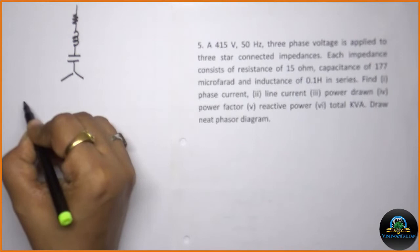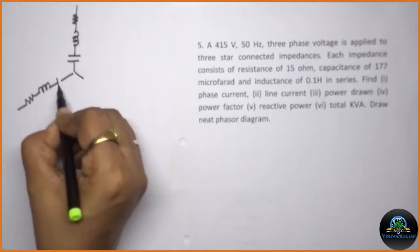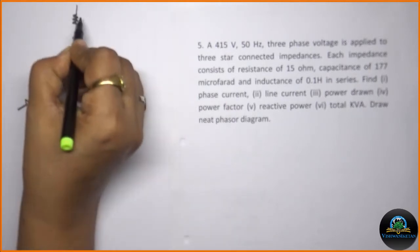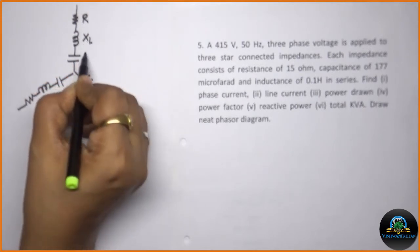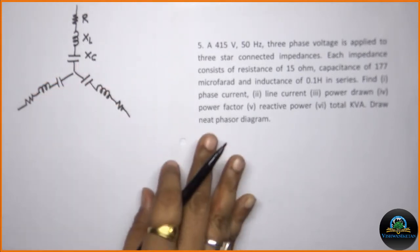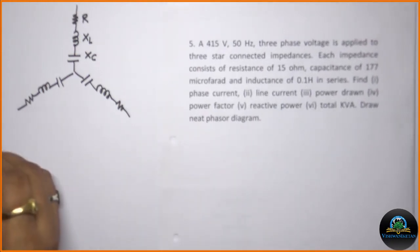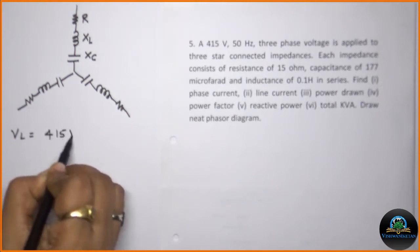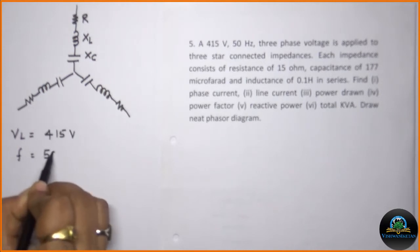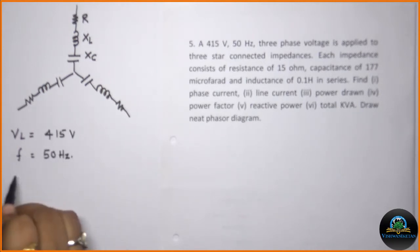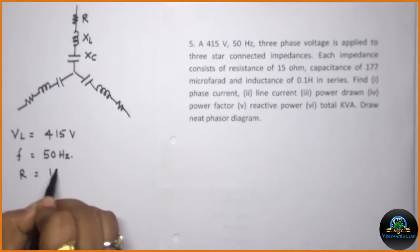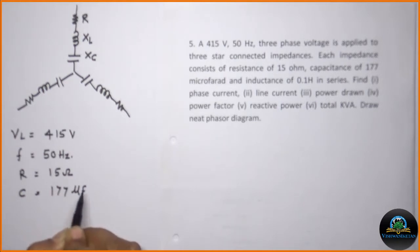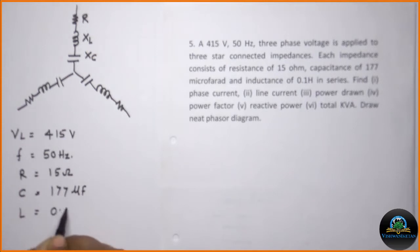As it is in star, the same values will be there for all three phases — resistance, inductance, and capacitance. Now we will write down the given values. Supply voltage V_L is equal to 415 volt, frequency is 50 hertz, resistance per phase is 15 ohm, capacitance is 177 microfarad, and inductance L is 0.1 henry.